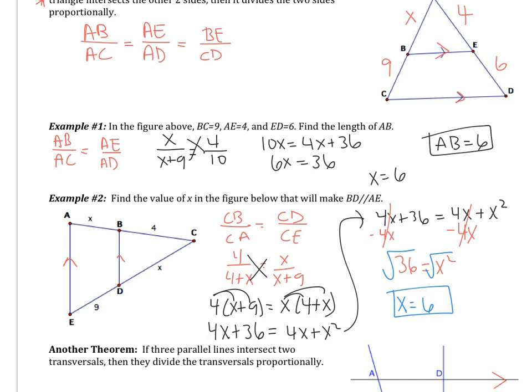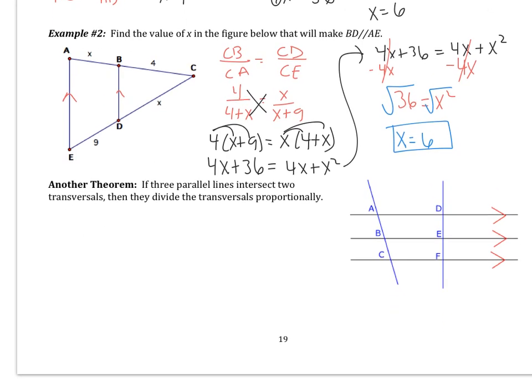That's the triangle proportionality theorem. Now we're going to learn another similar theorem: if 3 parallel lines intersect 2 transversals, then they divide the transversals proportionally. In the figure, the parallel lines are in black and they intersect 2 transversals shown in blue. The first transversal has sides AB and BC; the second transversal has sides DE and EF. This proportion holds true — that's all this theorem is.